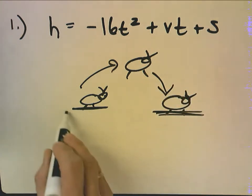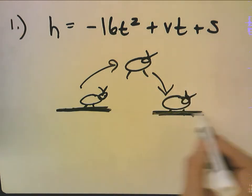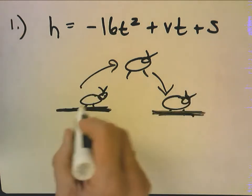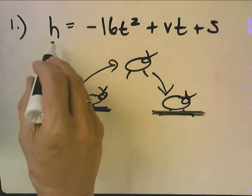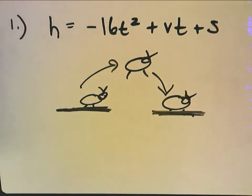So a lot of times the initial height, the s, is zero and a lot of times the height when it hits the ground, which is what a lot of the problems ask you for, is zero.